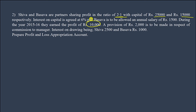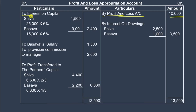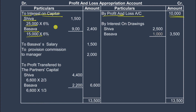Now calculating interest on capital. Shiva's interest: 25,000 into 6% per annum = 1,500 rupees. Baswa's interest: 15,000 into 6% per annum = 900 rupees. Total interest on capital = 2,400 rupees per annum.